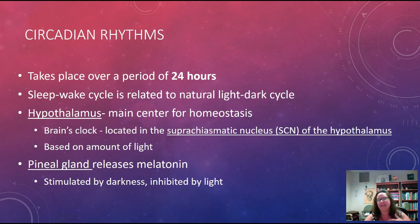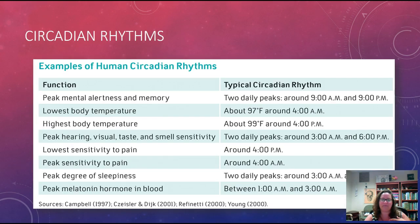Our pineal gland releases melatonin. We also release melatonin naturally — it's stimulated by darkness and inhibited by light. This is important when we think about using cell phones or TV before bed, as it can inhibit melatonin. Looking at circadian rhythm peaks, our peak mental alertness is around 9 a.m. and 9 p.m., and our peak degree of sleepiness is around 3 p.m.